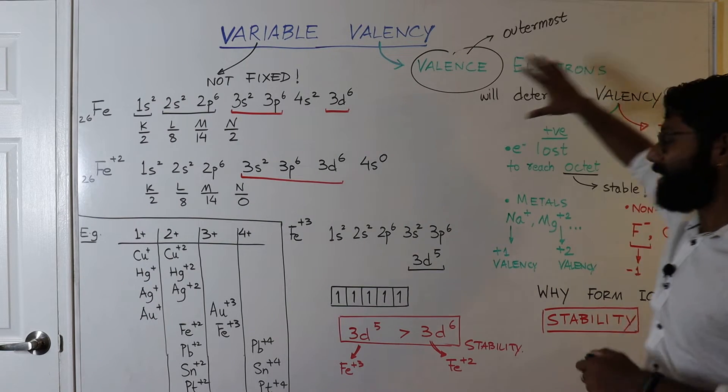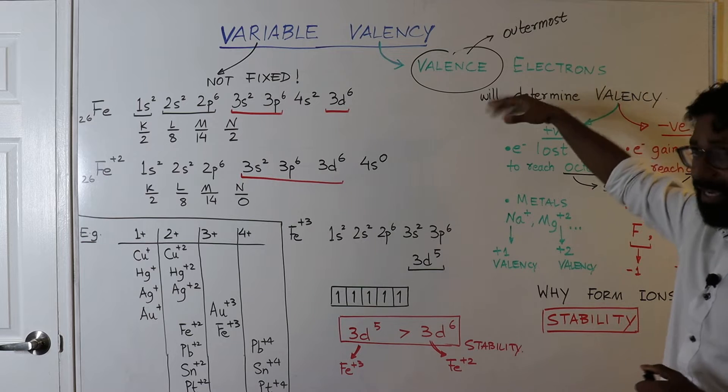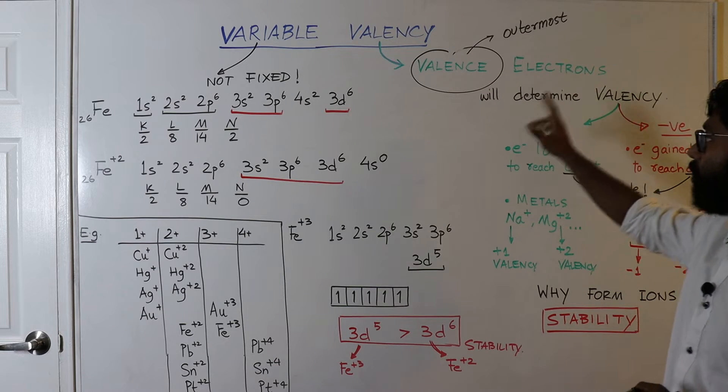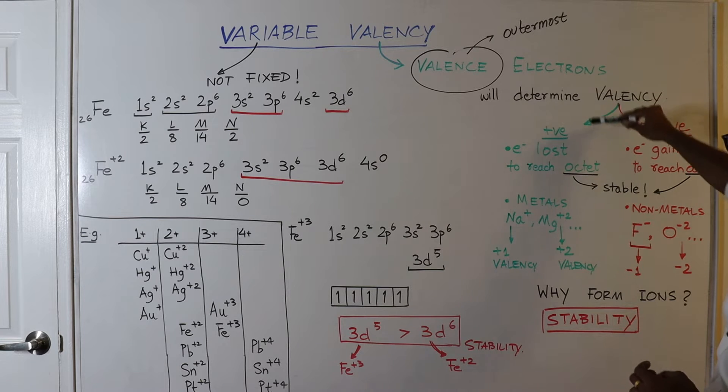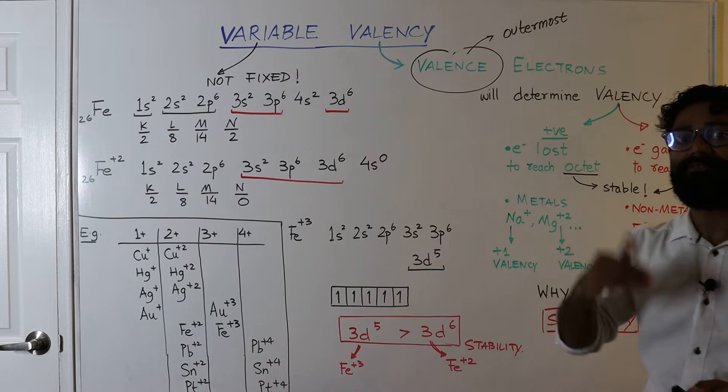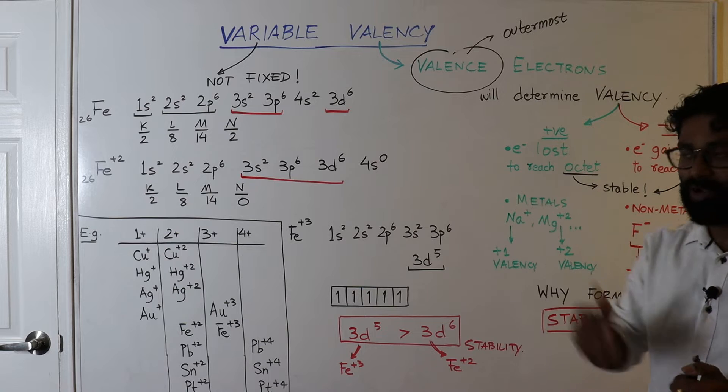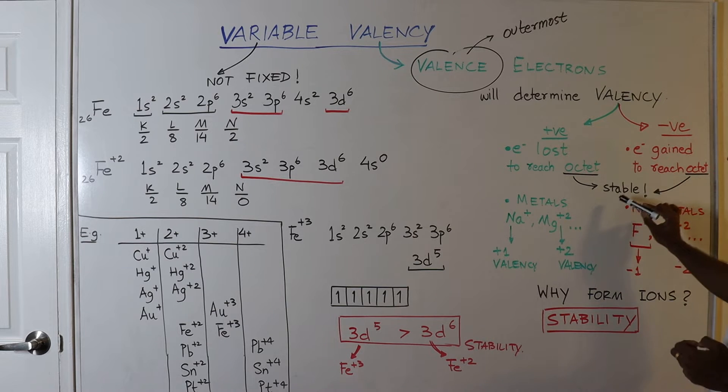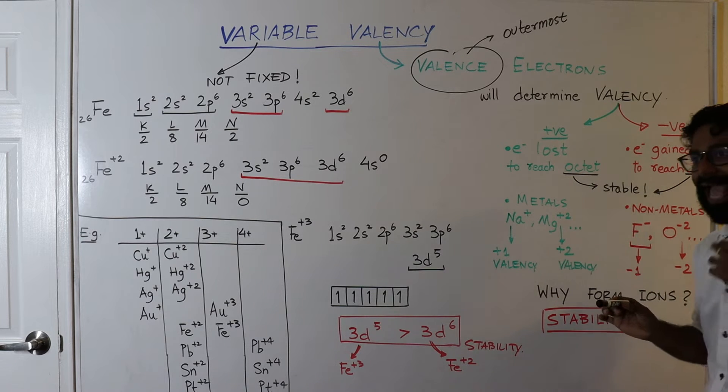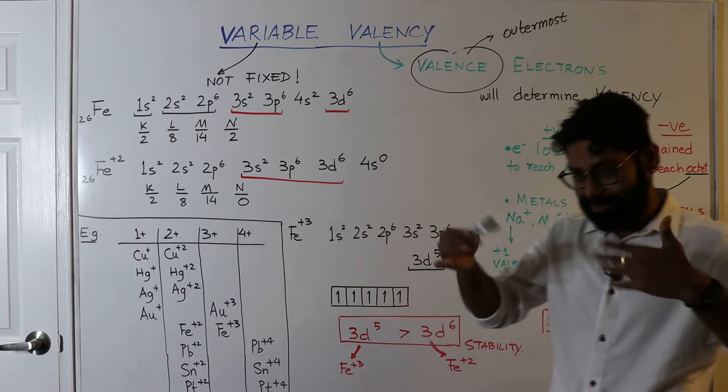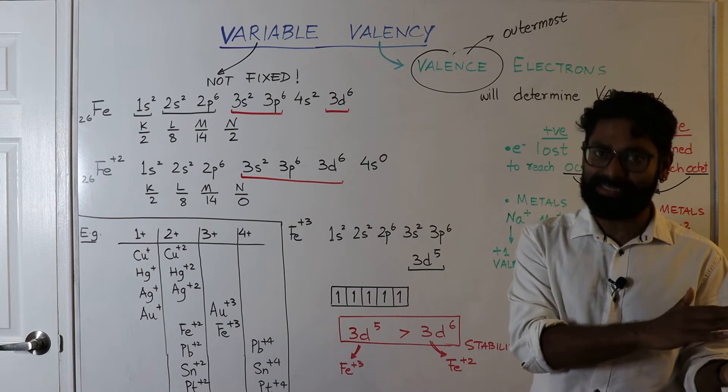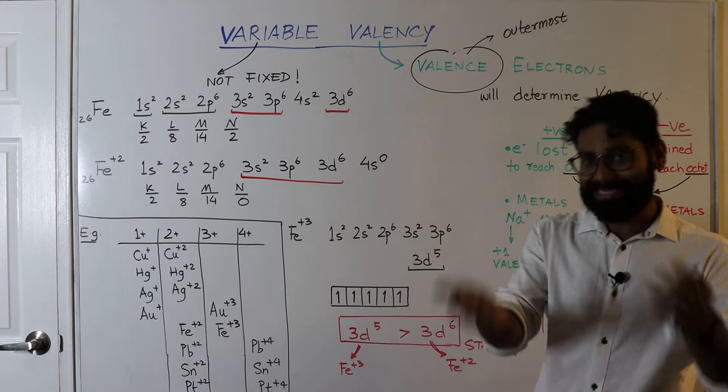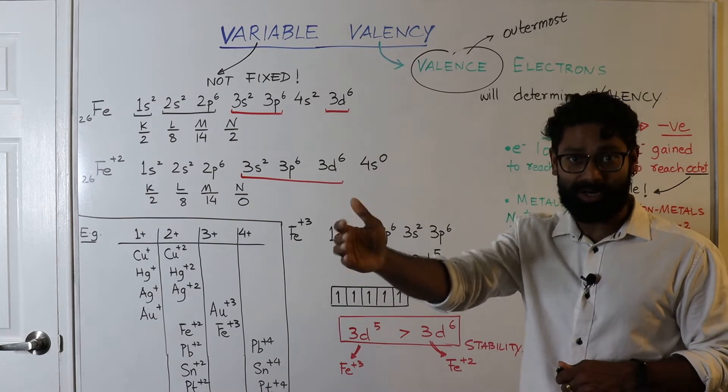In a similar concept, the valence electrons also control the valency of an element. Now how? So depending upon the number of valence electrons, the outermost electrons, in order to gain a stable octet, an atom will either lose electrons to gain an octet or accept electrons to become an octet.